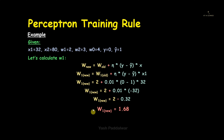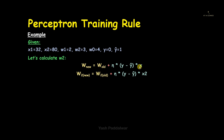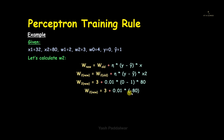Similarly, let's calculate the new value for w2. The formula is w2_new = w2_old + eta × (y − y_hat) × x2. Note that the learning rate must remain the same throughout all iterations. Filling in: w2_new = 3 + 0.01 × (0 − 1) × 80 = 3 − 0.80 = 2.20. So the new value of w2 is 2.20.